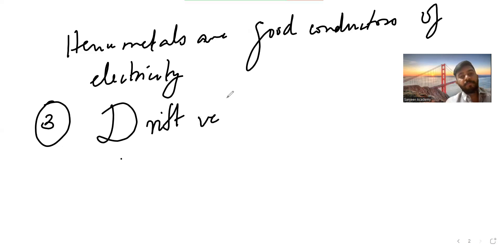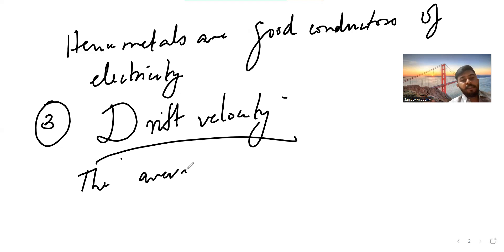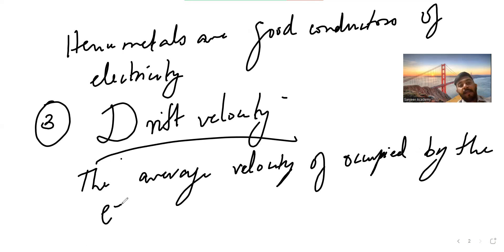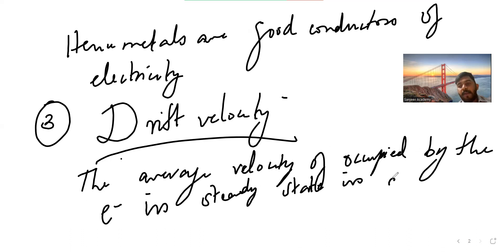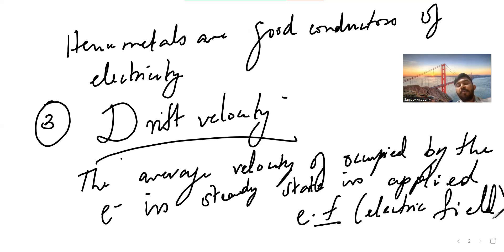There is a term called drift velocity, because the next point is related to it. Drift velocity is the average velocity occupied by the electrons in the steady state in an applied electric field. This electric field (EF) is the applied electric field. This is called drift velocity.